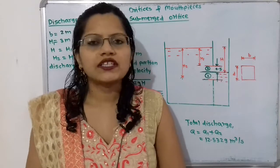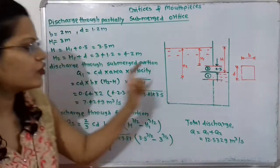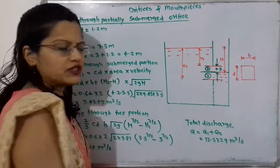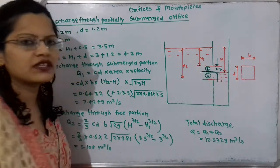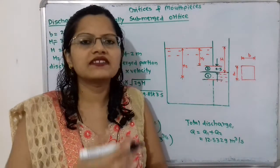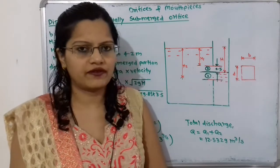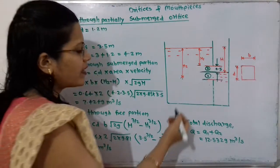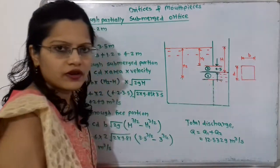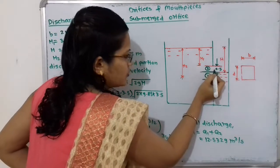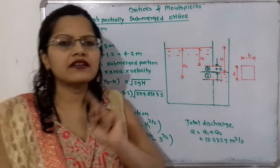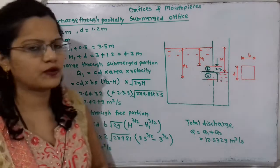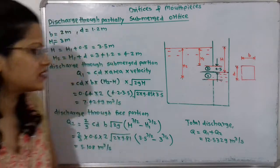We have to find the discharge through this partially submerged orifice. Observing the diagram, one portion of the orifice is the free portion and the other portion is submerged in water — hence it is a partially submerged orifice. We divide the orifice into two parts: the submerged portion and the free portion, and calculate two types of discharge accordingly.